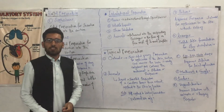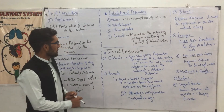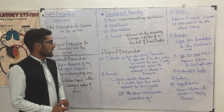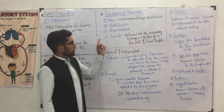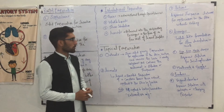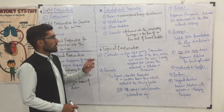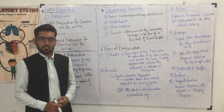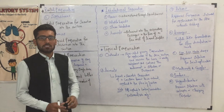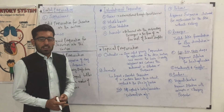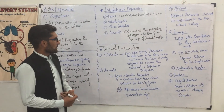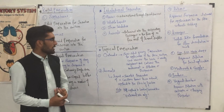Next is inhalational dosage forms or inhalational preparations. These include gases, volatile liquids, steam inhalation, and aerosols. Gases are available in different types of pharmaceutical dosage forms and are administered through special devices, such as ventilators, for lung-related diseases like asthma.